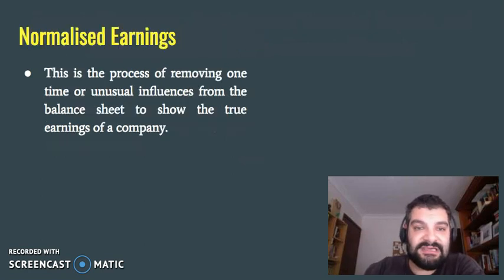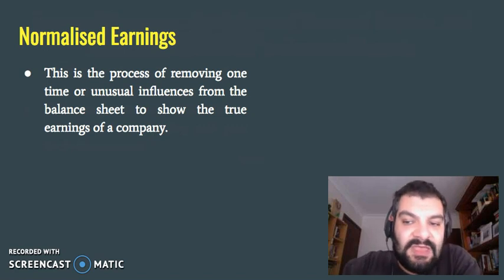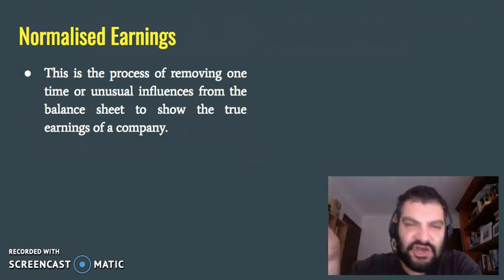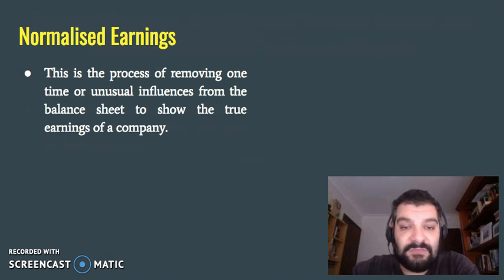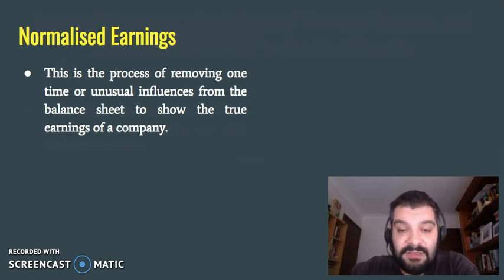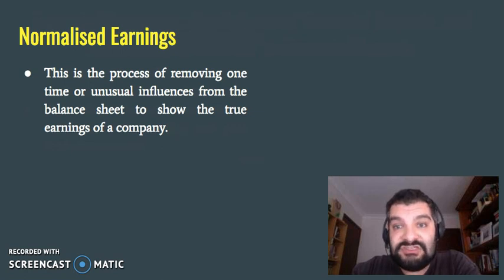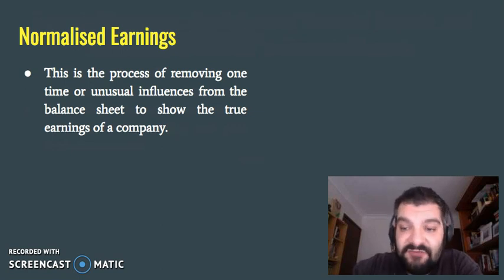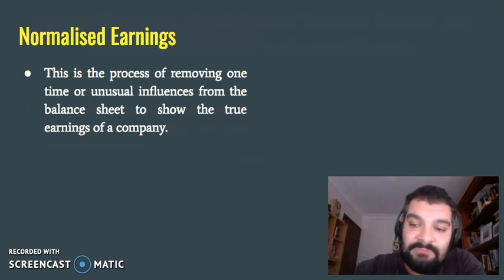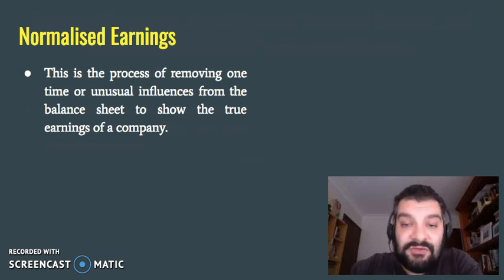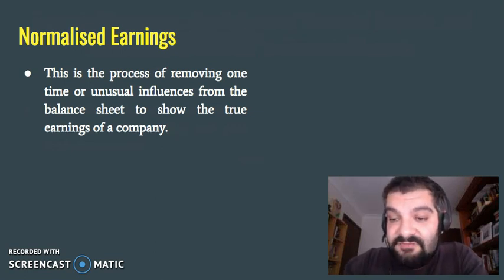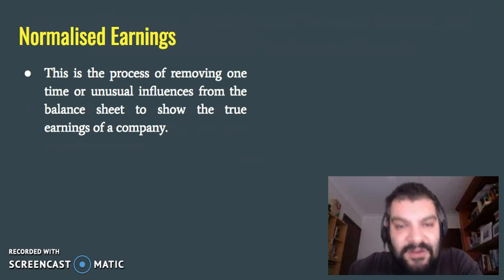The first limitation is what we call normalized earnings. This is the process of removing a one-time or unusual influence from the balance sheet to really show the true earnings of a company. For example, the removal of a land sale which would achieve a large capital gain — they may have sold land once, received quite a large amount of money, but it happened for the first time in 10 years and probably won't happen again for another 10 or 20 years. So by removing it, it shows the true earnings of a company and doesn't give the illusion that they're making more than they normally do.